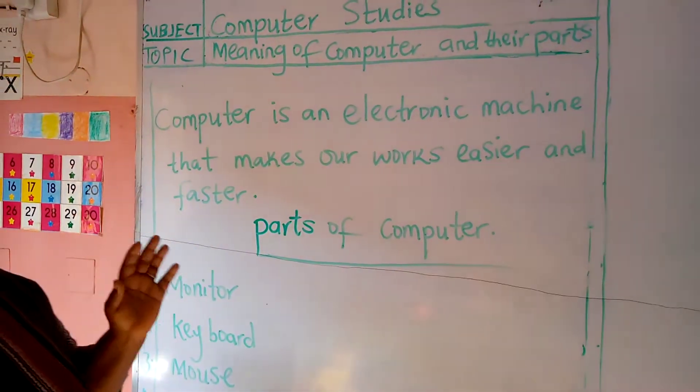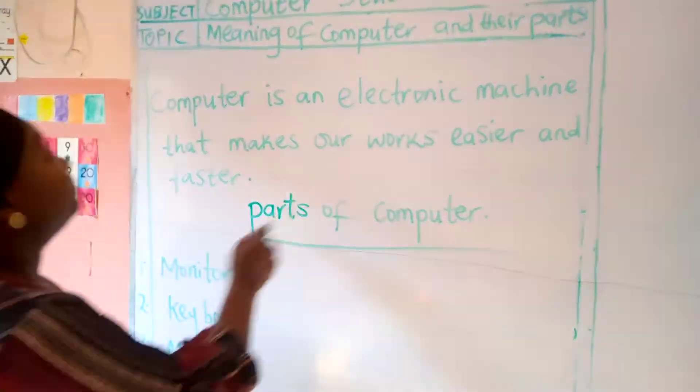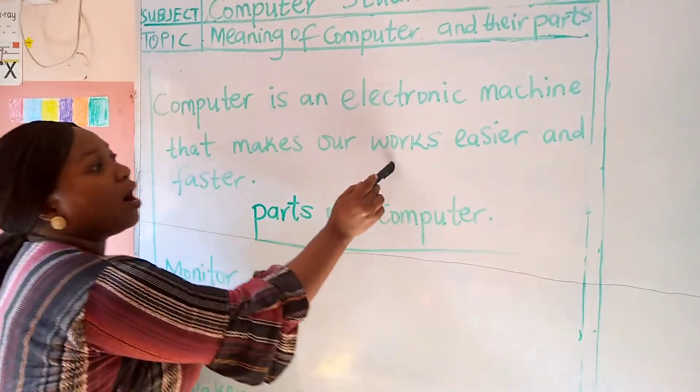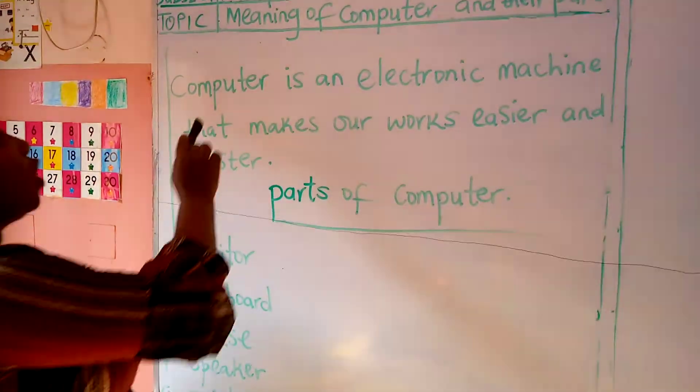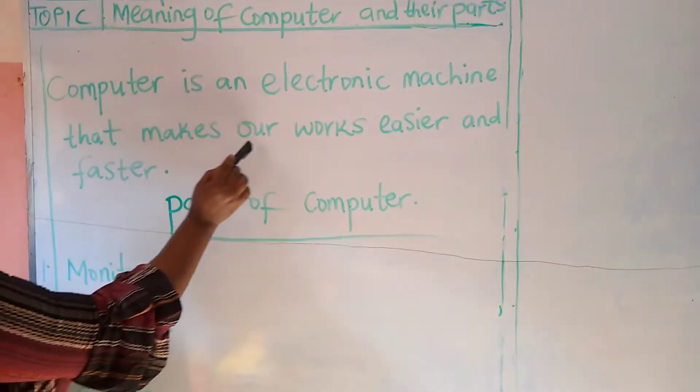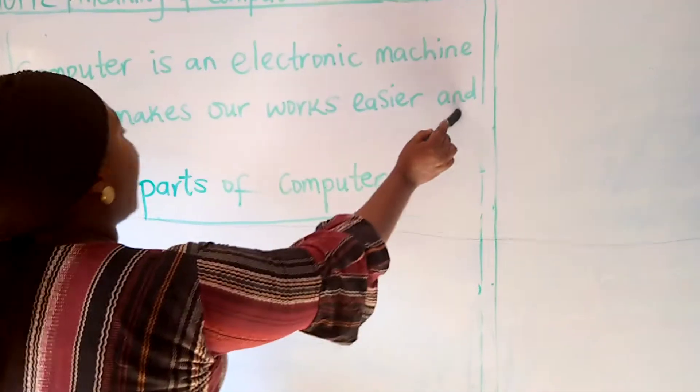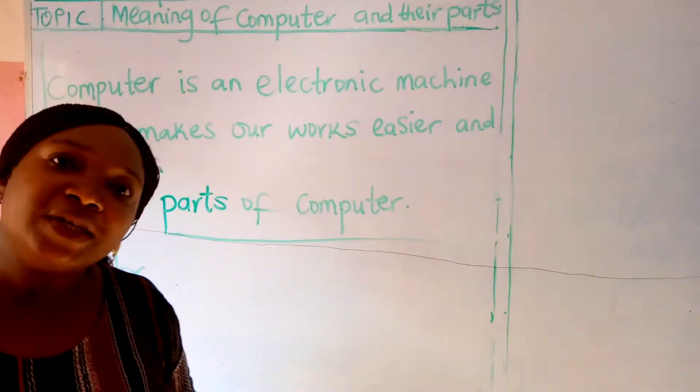Now what is computer? Computer is an electronic machine that makes our work easier and faster. That is the meaning of computer.